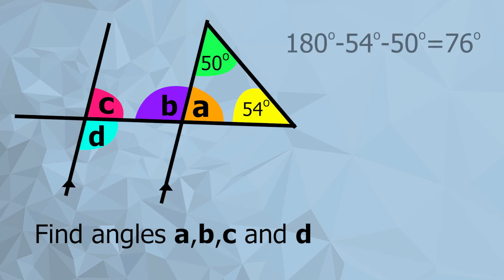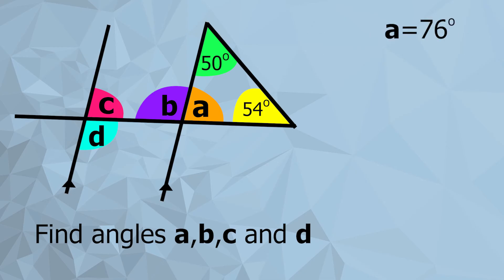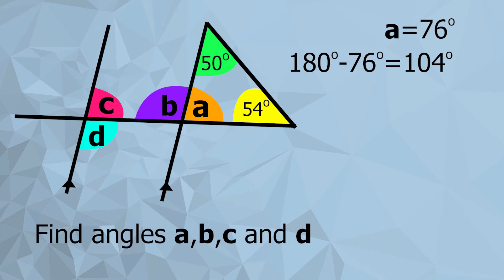Following on from that, I can see we've got a straight line and those two angles must add up to 180 degrees. One of them is 76 degrees, so the other one must be 104 degrees. Angle B is 104 degrees.